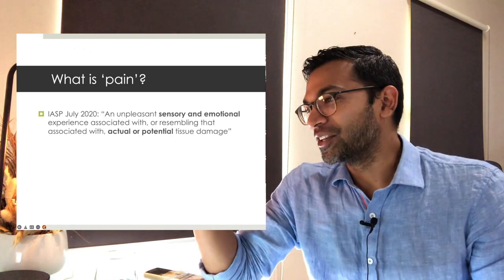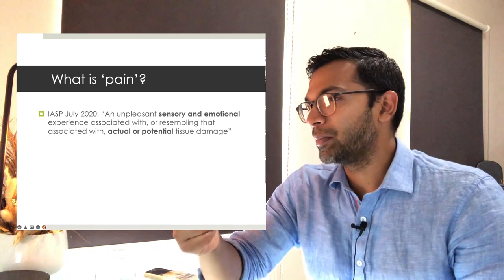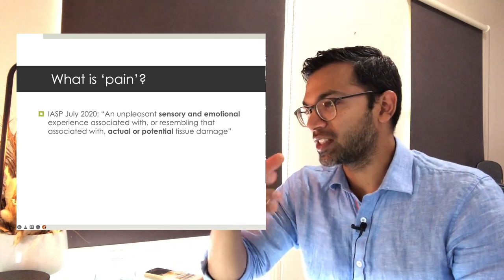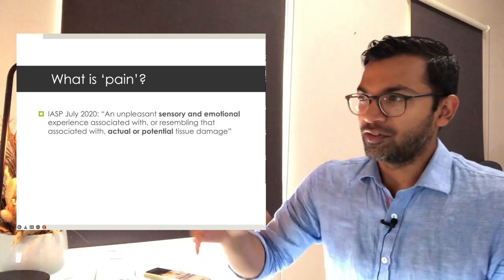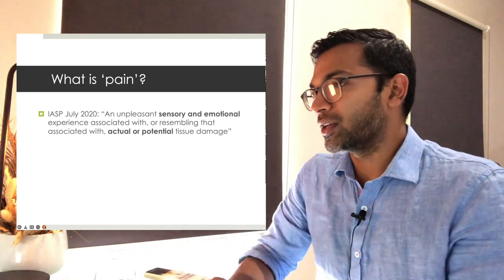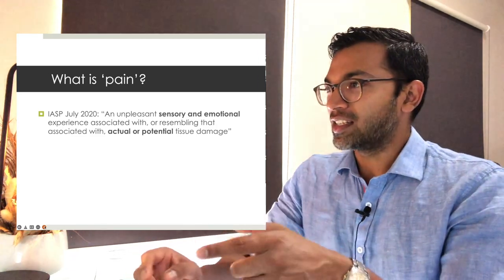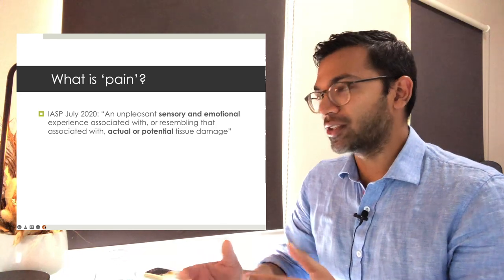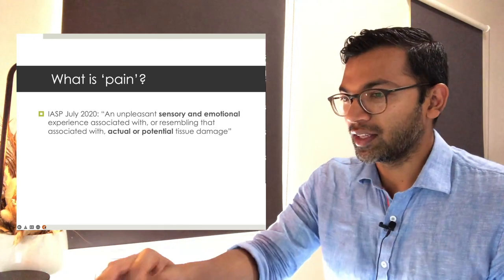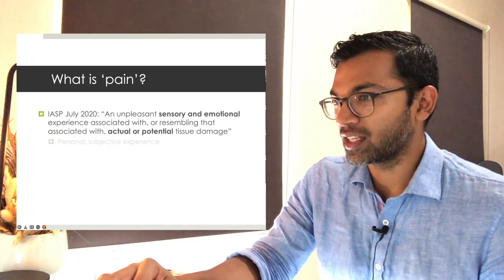The IASP — the International Association for Studying Pain — has a very specific definition, but you've essentially hit those two points: it's a sensory thing and an emotional thing. The extra element they've added is actual or potential tissue damage, so you don't even have to have tissue damage for pain to be a real thing.